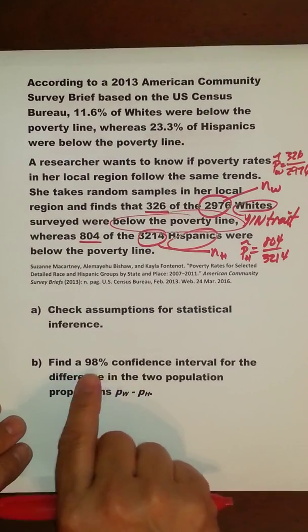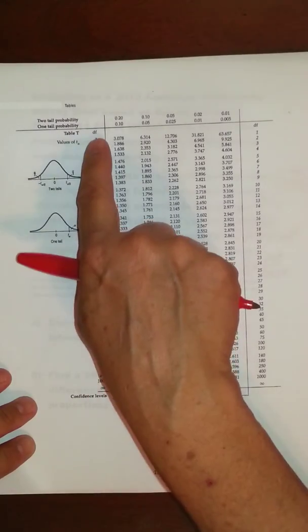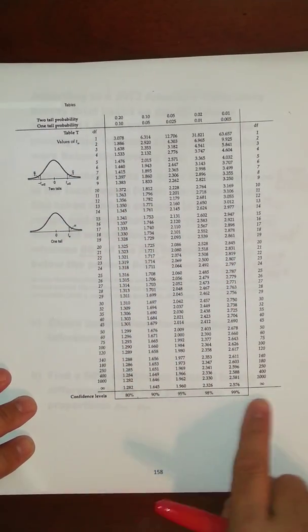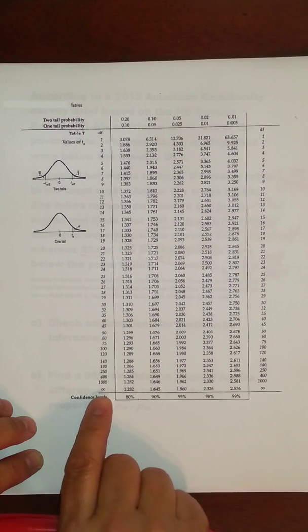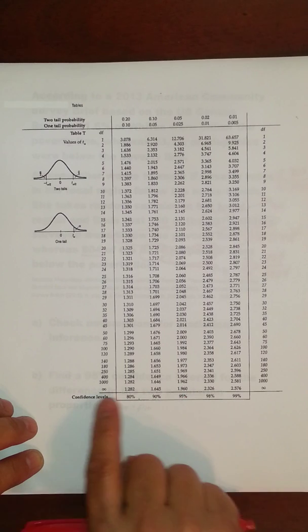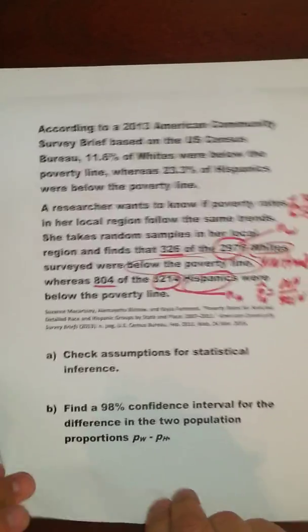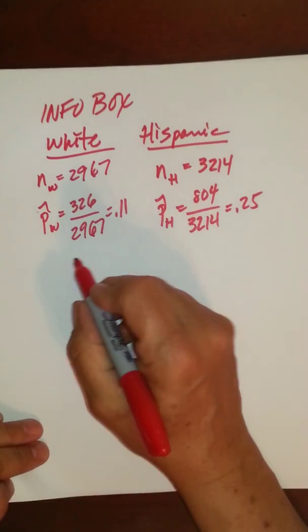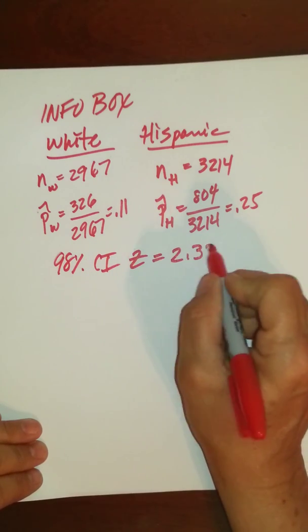We're asked for a 98% confidence interval, so we look it up in the T-table. The degrees of freedom are on the left-hand side and the confidence intervals are on the bottom. When you're talking about a proportion, you're talking about a normal curve, so you use degrees of freedom of infinity. Reading across to 98%, the multiplier is 2.326. So the 98% confidence interval z-multiplier is 2.326.